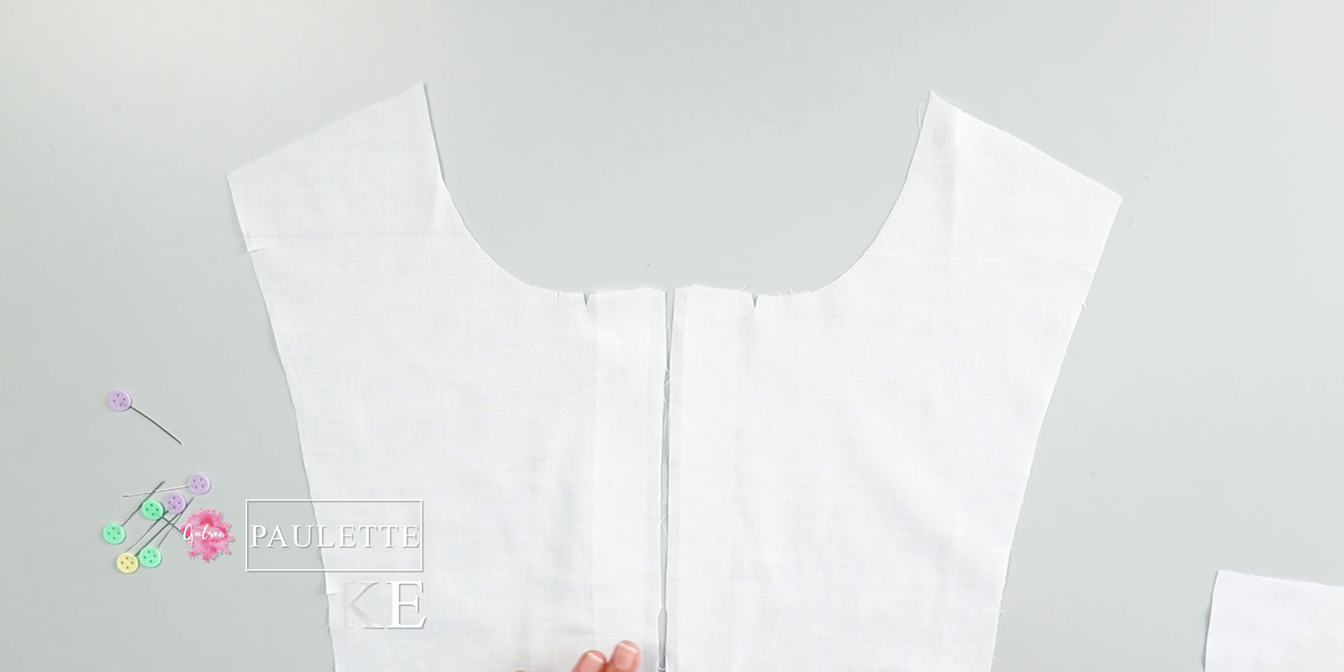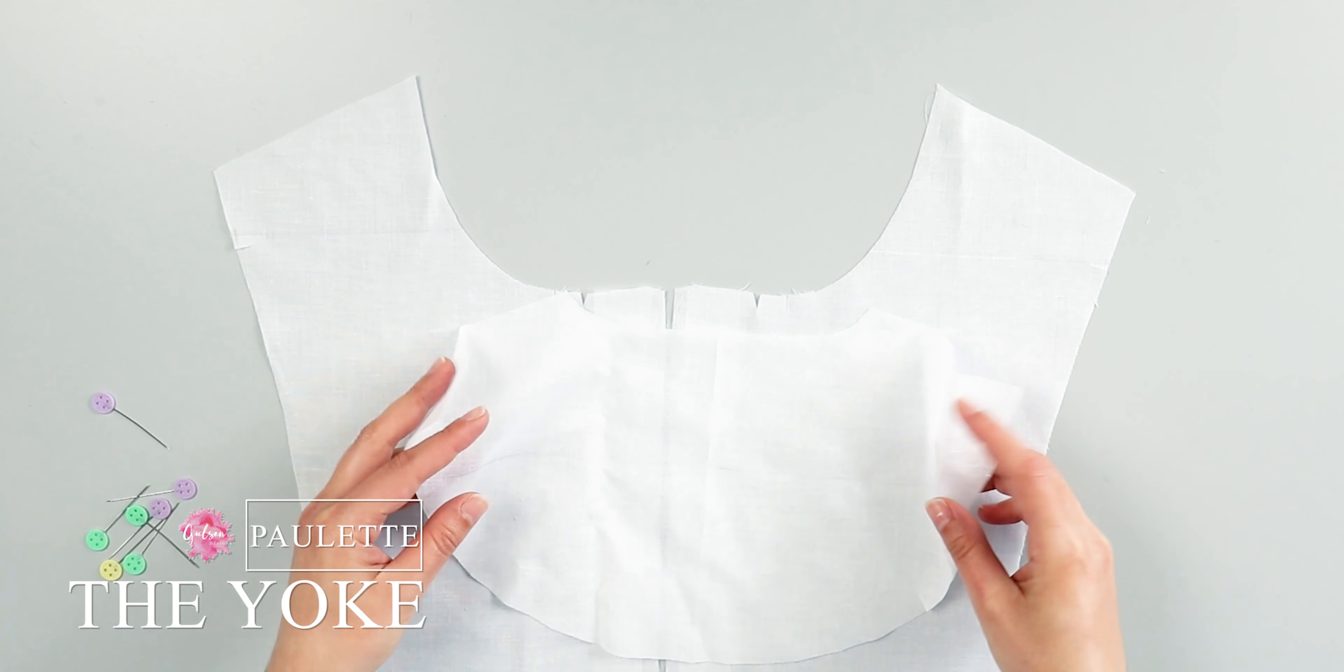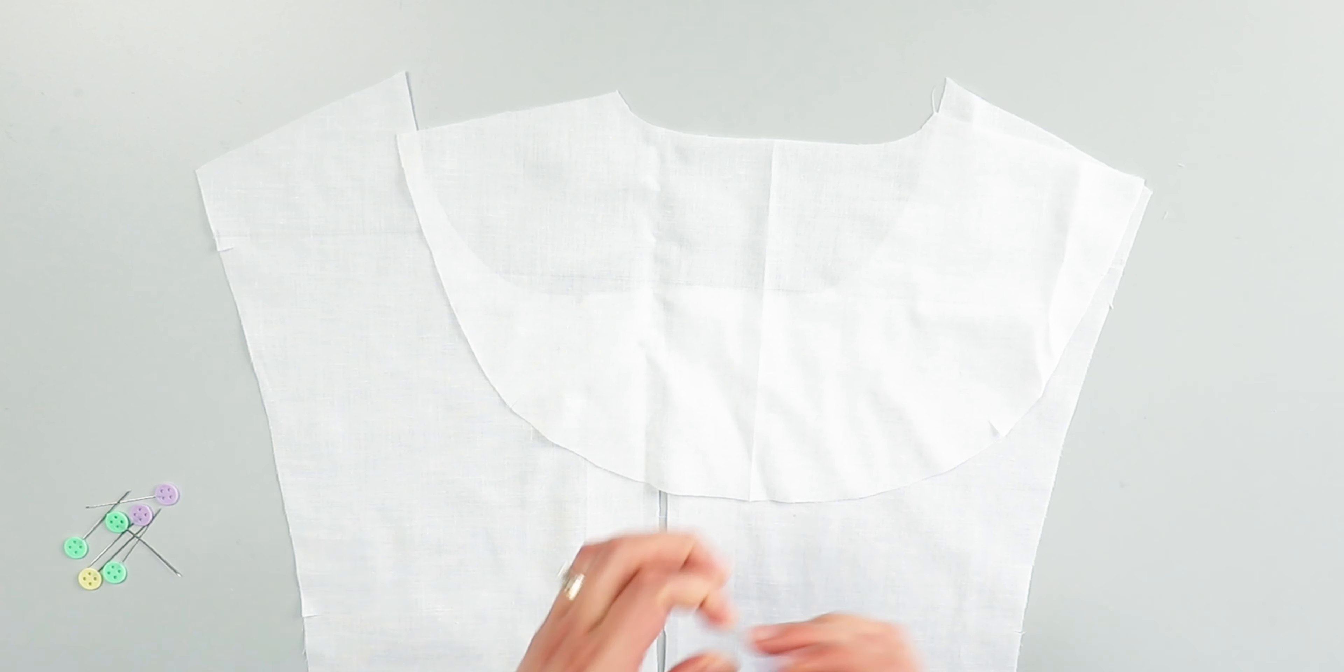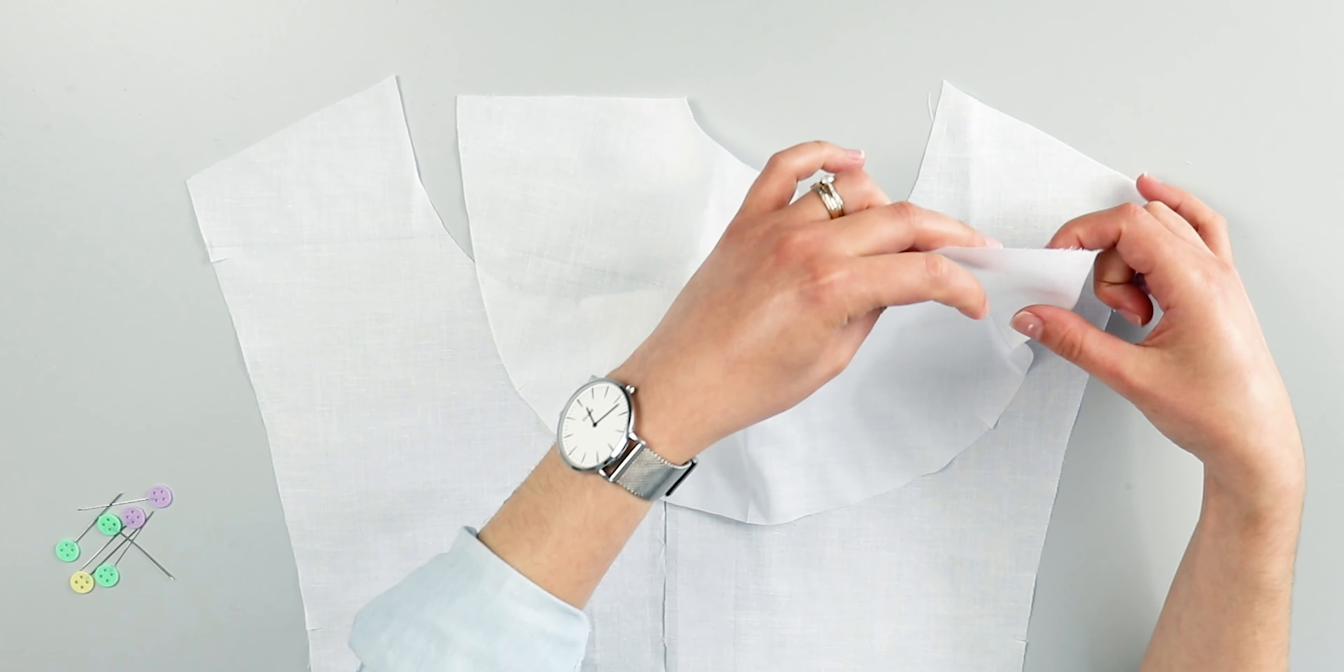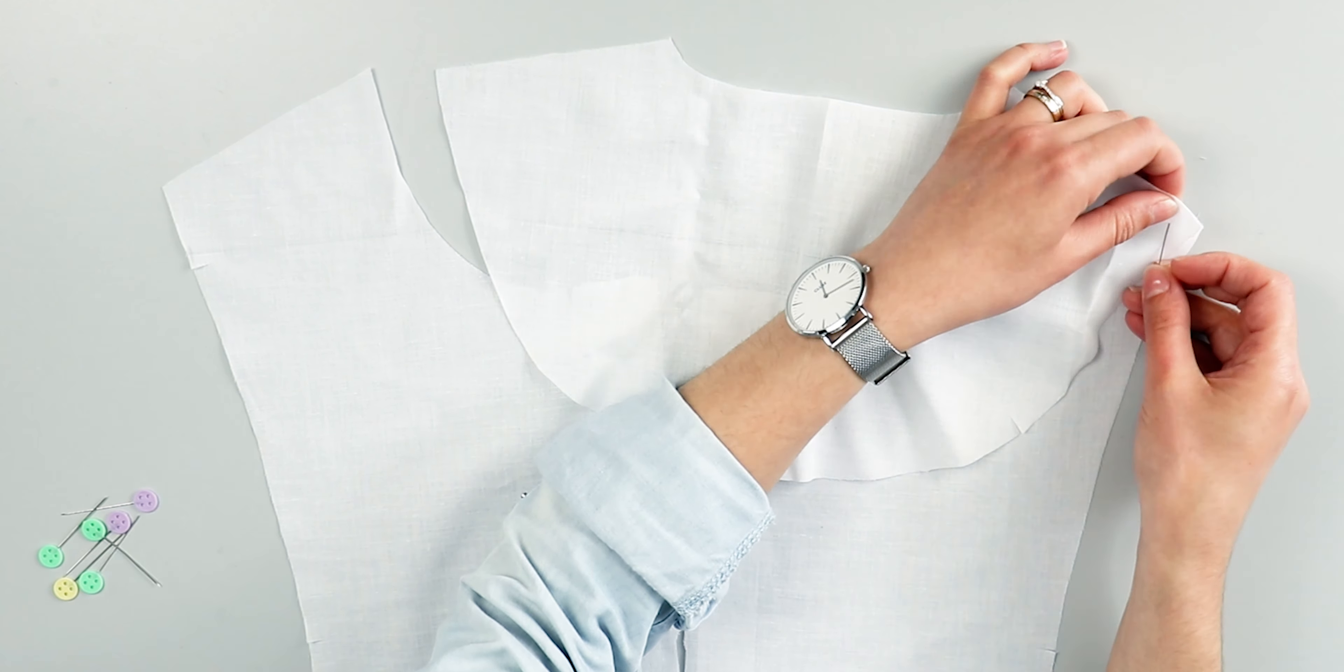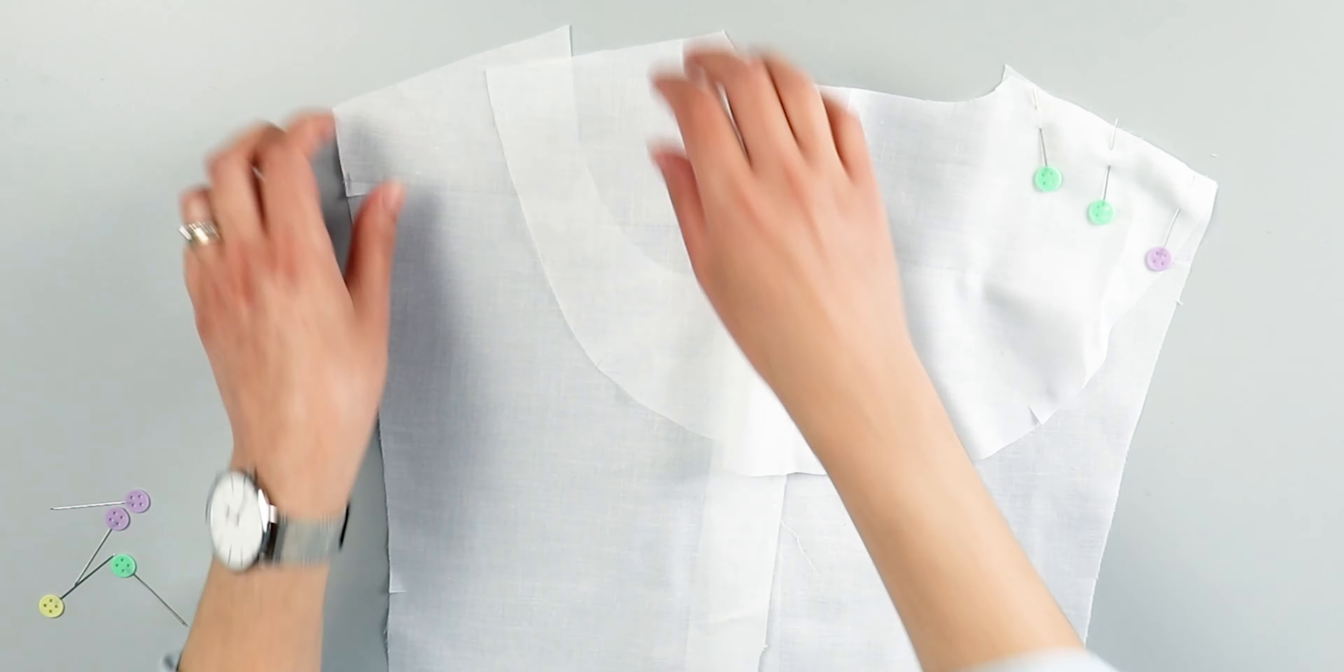To begin with, take the front panel A's and place them flat on your surface. Make sure that the right side is facing up. Then, place the yoke on top with the wrong side facing up. Pin the yoke to the front panels on the shoulder seams, making sure that they line up.